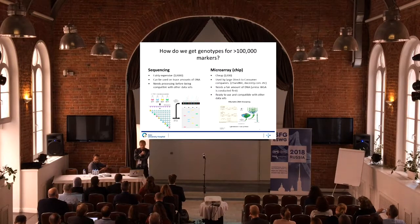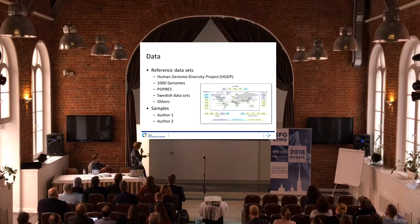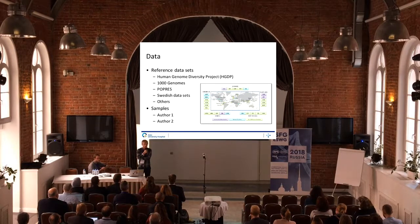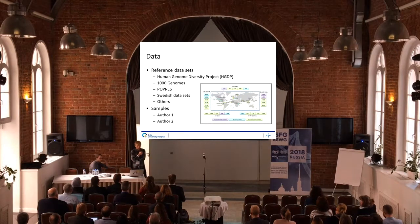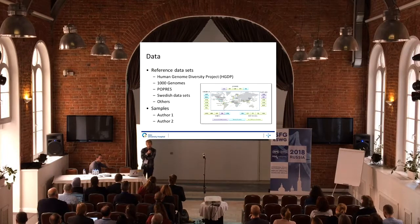The reference data sets we've been using include the HGDP, which is a big collection of cell lines from different populations. We also have the 1000 Genomes project, which set out to get whole genome sequencing from about 2,500 genomes from different populations, and you can see those on a map.